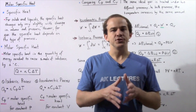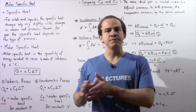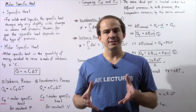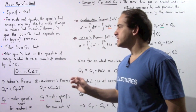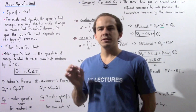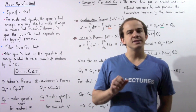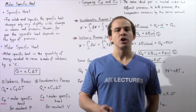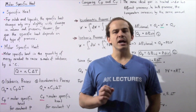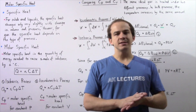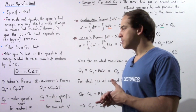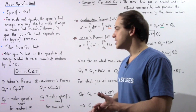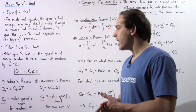Before we look at the difference in the values of the specific heat for different gases undergoing different processes, let's define the molar-specific heat. The molar-specific heat of a substance is simply the quantity of energy that is required to raise the temperature of one mole of that substance by one degree Celsius. And the relationship between the amount of energy and the change in temperature is given by this equation.